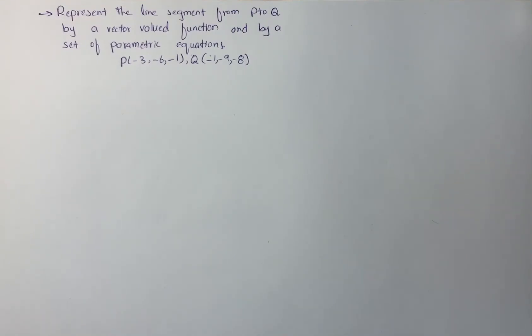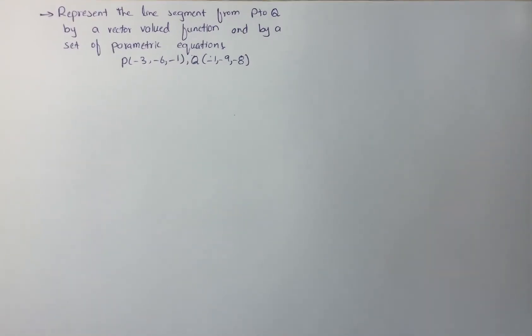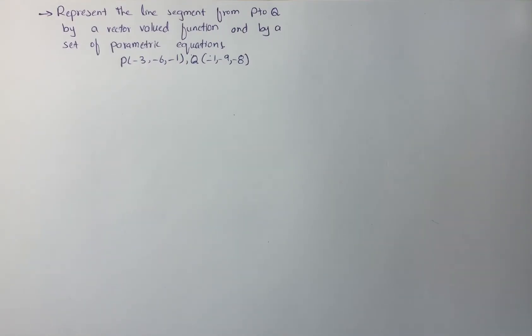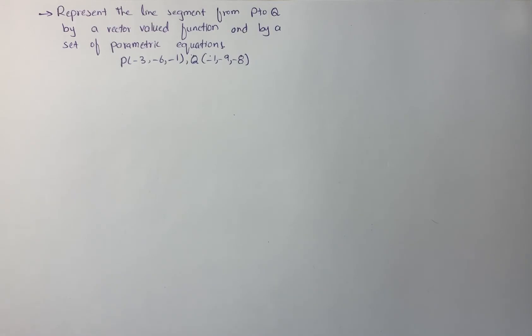The question says: represent the line segment from P to Q by a vector-valued function and by a set of parametric equations. P is (-3, -6, -1) and Q is (-1, -9, -8).